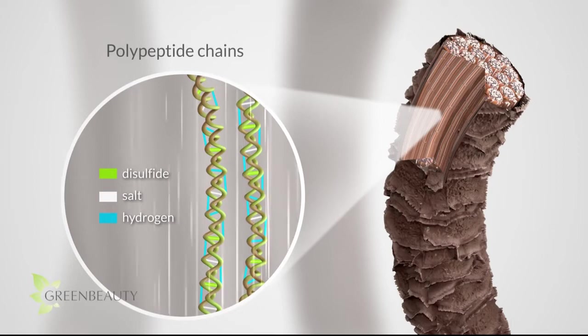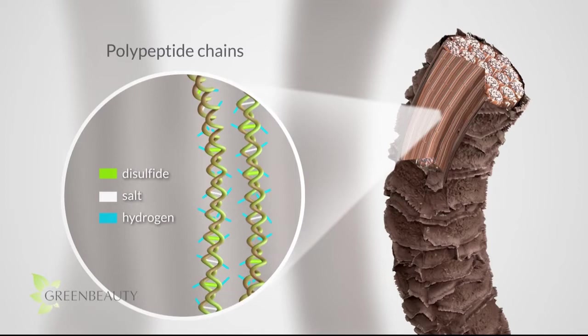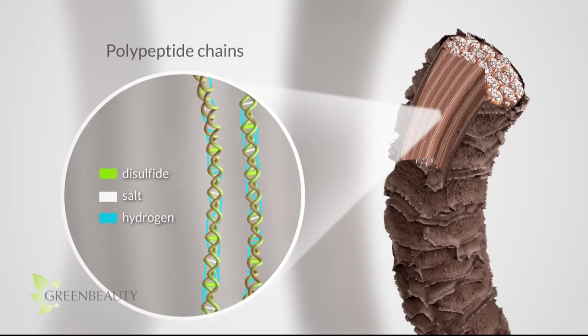Some bonds are weaker than others and temporarily detach when your hair comes into contact with heat or moisture. That's why your curl pattern is looser and more consistent when your hair is wet. If you let your hair air dry on its own, the bonds will reattach to random close by positions, making your curl pattern tighter and more inconsistent.